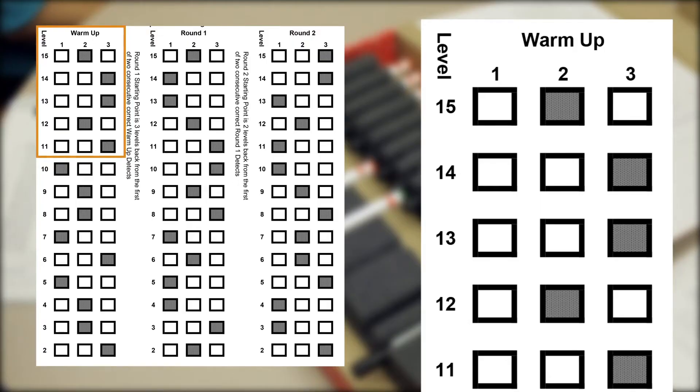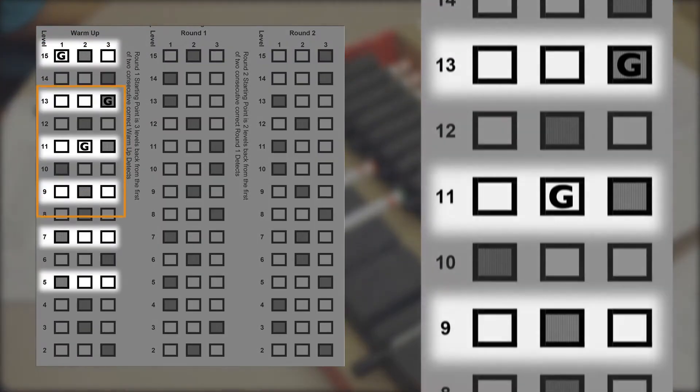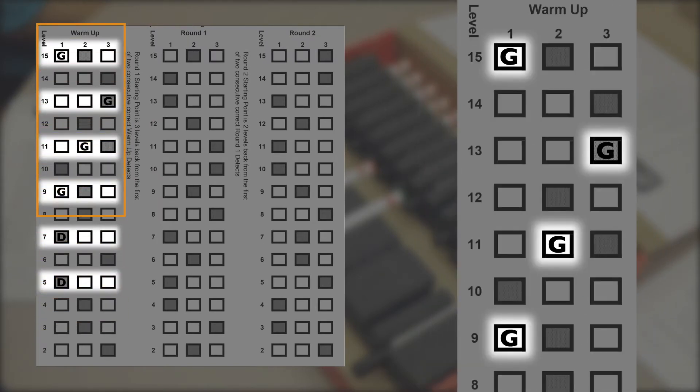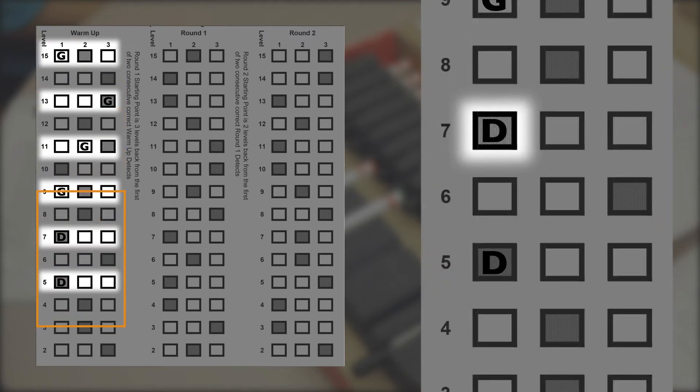Sniff, which pen? I detect number one. Let's review the warm-up. We see the test administrator presented every other pen sequence starting at pen number 15. We see the test individual was initially guessing. At pen number seven, the individual correctly detected the first pen in the left position. At pen number five, the individual again correctly detected pen number one. The warm-up was stopped after this confirmation.